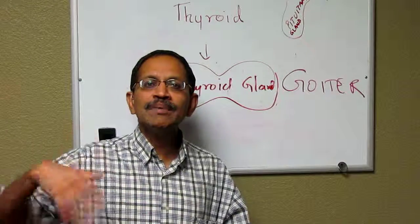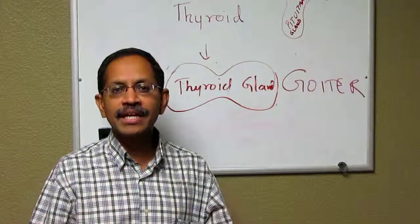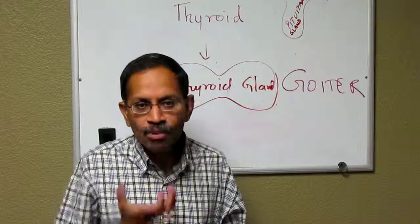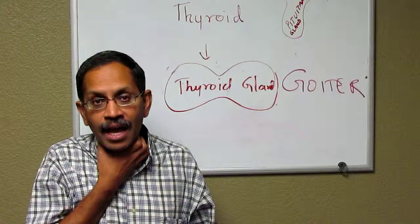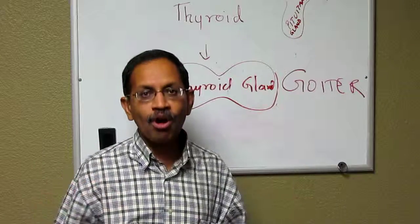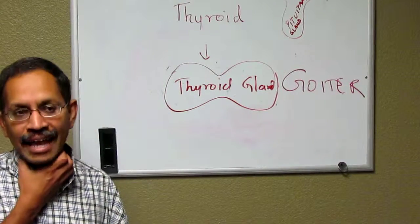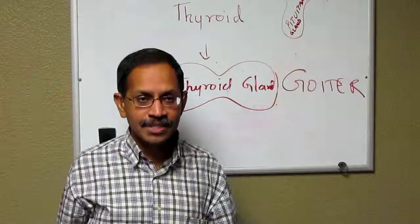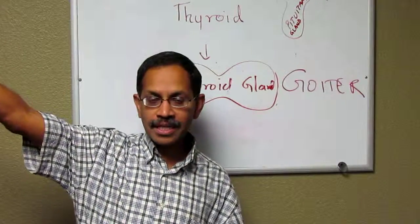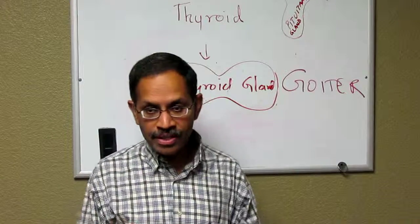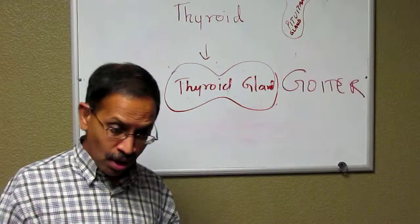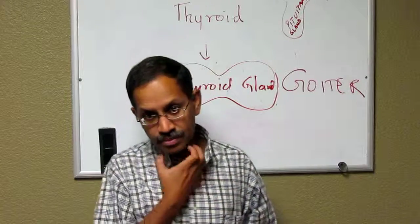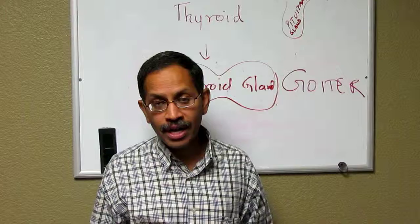But goiter can be because of multiple other reasons. When a person is pregnant, the thyroid gland produces a lot more thyroid hormone, so the gland can be enlarged. During puberty, the need for thyroid hormone is more, so the gland can be enlarged. In places where there's iodine deficiency, like the Himalayas in India, or where people are not using iodized salt, you can have an enlargement of the thyroid gland.